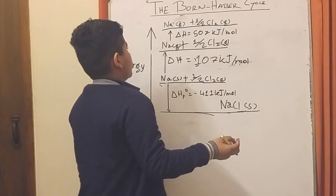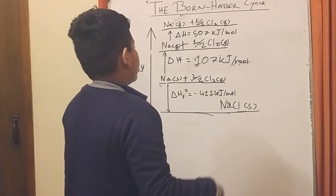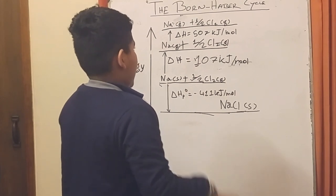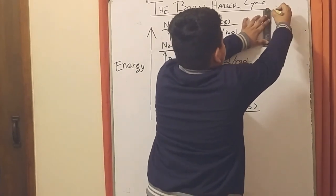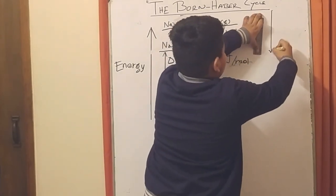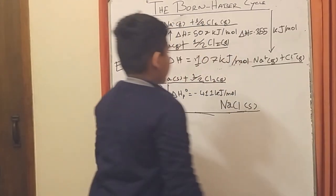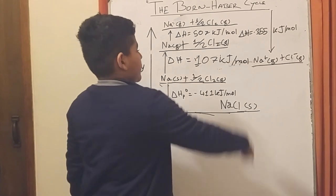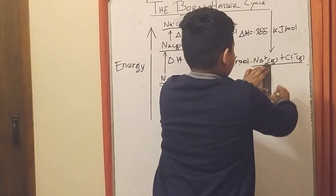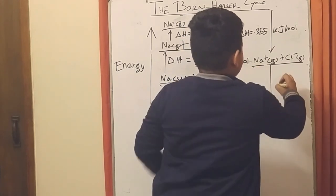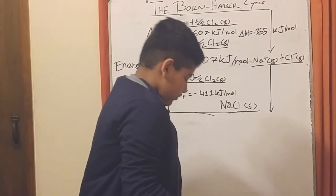And turn it into an ion. I don't really have much space on the top, but using more delta H we get through sodium ion that is gaseous and chlorine gas, and we go through until we get down to both being ionic.